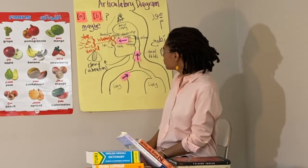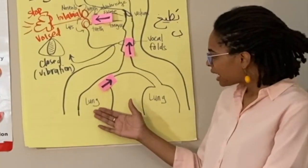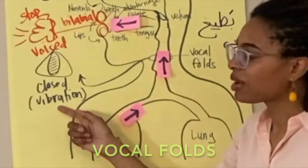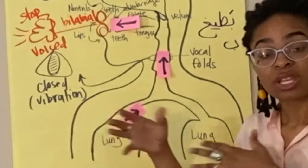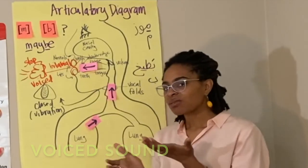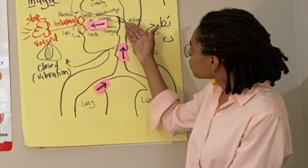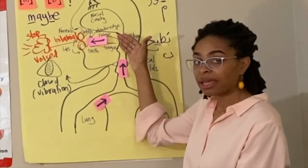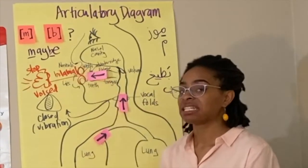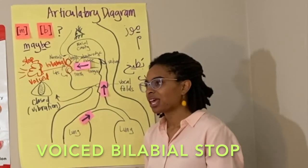In this diagram, I have an articulatory diagram made to depict a specific sound. First, we see that air is flowing up through the lungs and through the vocal folds. As it gets to the vocal folds, we can see that there is a closed position, so there's more vibration and therefore we have a voiced sound. That already limits the possibilities of what sound this could be. Next, we have the air moving through into the oral cavity, where both lips are involved, and as the air moves out it creates a stop sound — it is a voiced bilabial stop.